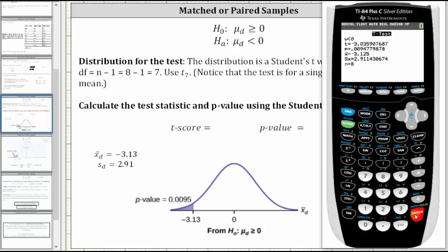The t-score is approximately negative 3.0359, and the p-value is approximately 0.0095. Let's go ahead and record these.